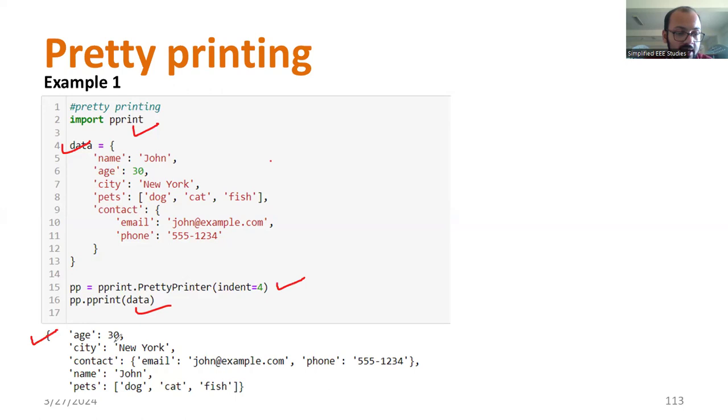The output will be in this form: age 30, city New York, contact details, name is represented as John and he is having the pets. It will be represented in the form of dictionary. Here you can see a dictionary with key and value pairs. Age is key and value will be 30. City is the key and New York will be the value. Like that, you will be getting a better visualized form. This is known as pretty printing.